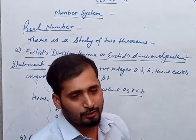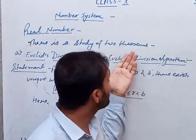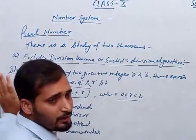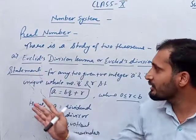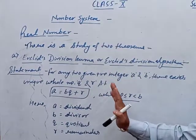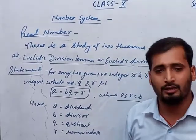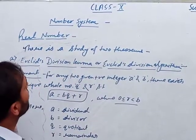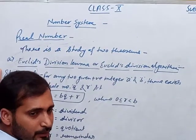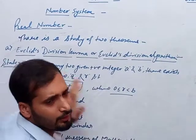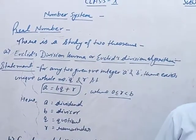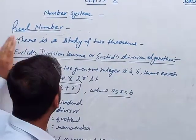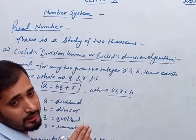Students, today I'm here to deliver a lecture on the first chapter: Number System. In the last class we discussed a short description of the syllabus — how many chapters are asked and for how many marks. Today we start with the first chapter, Number System. In Class 9th you have already discussed real numbers, especially rational and irrational numbers, and we continue our lecture with irrational numbers.